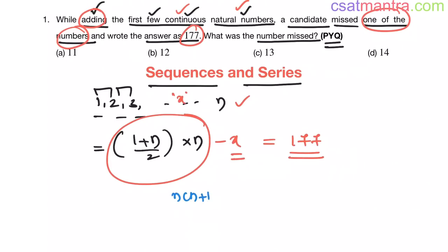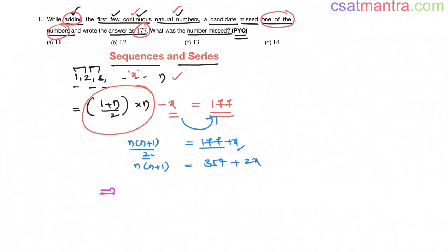Now n into n plus 1 by 2 equals 177 plus x. I brought x this side. So n into n plus 1 equals 354, 2 into 177 is 354, plus 2 into x, that's 2x. Now this equals n squared plus n. n into n is n squared, n into 1 is n. So this is 354 plus 2x. x is the missing number we want.